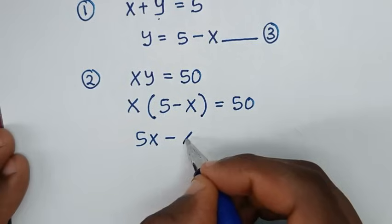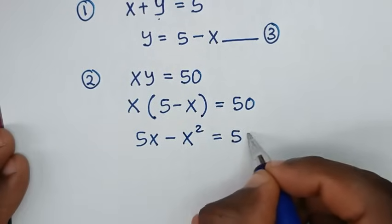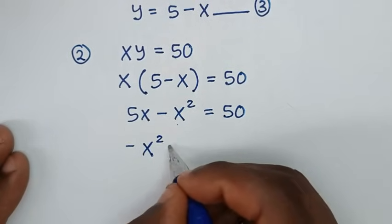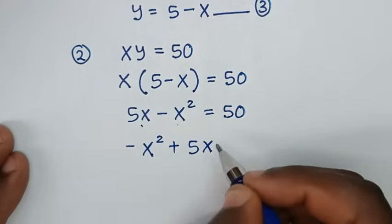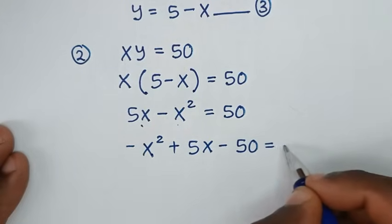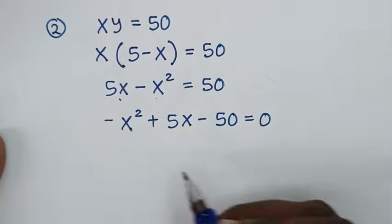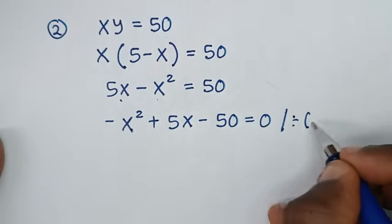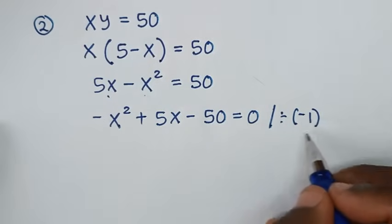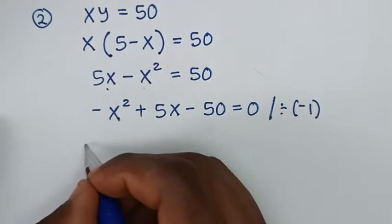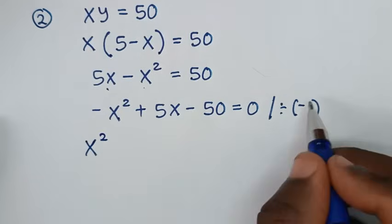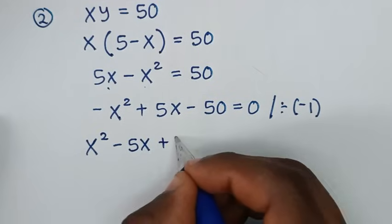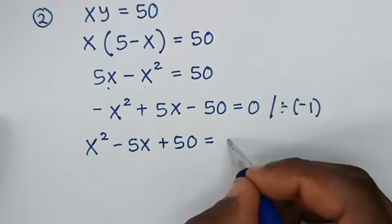Rearranging, we set negative x squared plus 5x minus 50 equals 0. To make the leading coefficient positive, we divide the whole equation by negative 1: negative x squared divided by negative 1 is positive x squared; 5x divided by negative 1 is negative 5x; negative 50 divided by negative 1 is positive 50. So we get x squared minus 5x plus 50 equals 0.